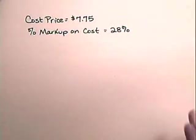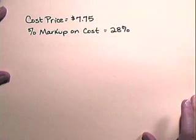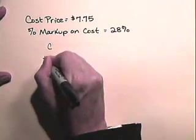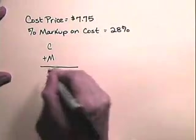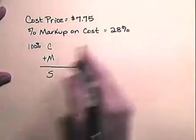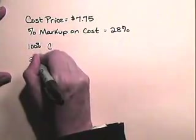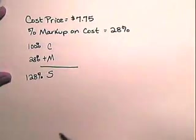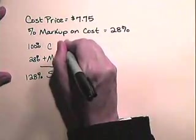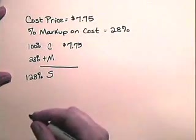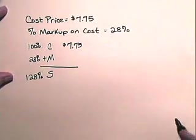In this exercise, cost price is $7.75. The percent markup on cost is 28%. So let's write our formula: cost plus markup equals selling price. The cost is 100%. The markup is 28% of the cost. So the selling price is 128%. The cost is $7.75.